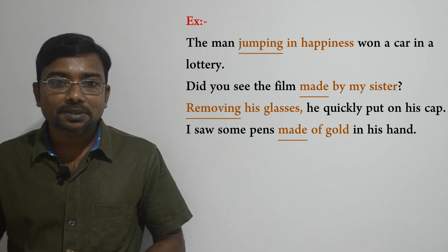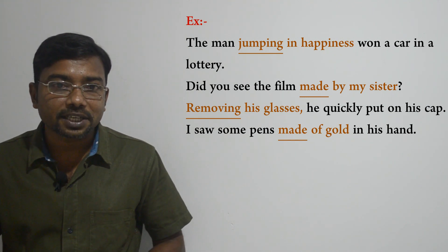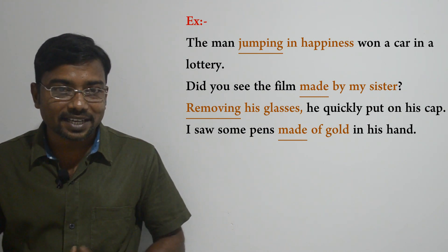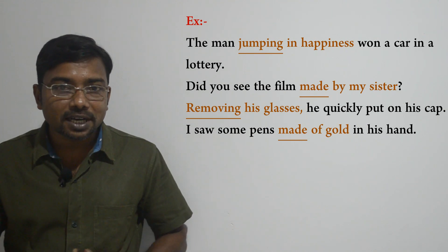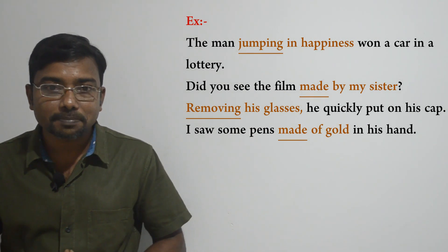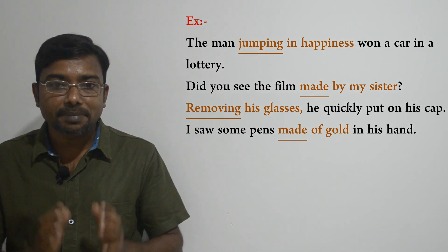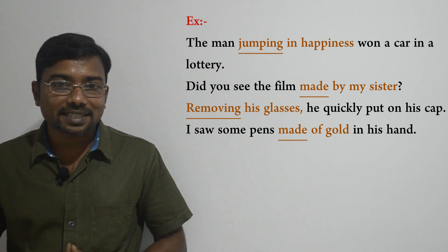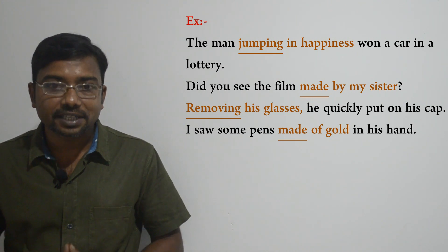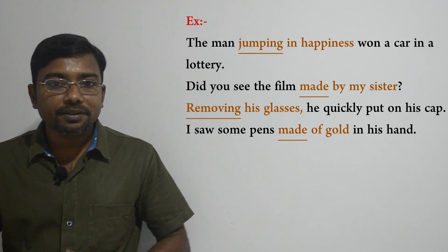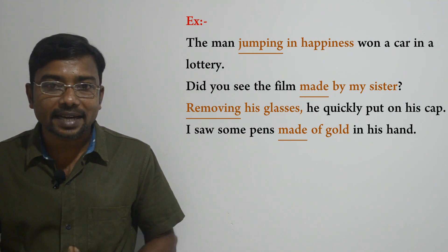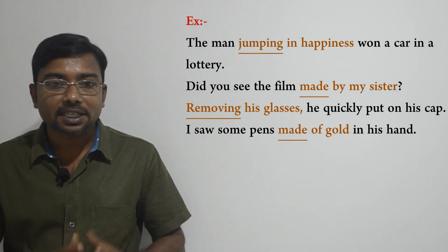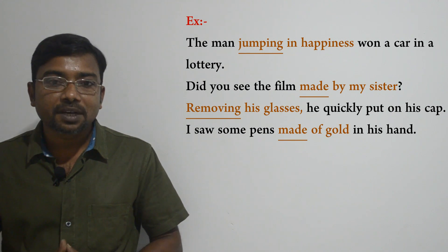Let's move to the next example: 'Removing his glasses, he quickly put on his cap.' Here, 'removing his glasses' is the participle phrase because it begins with the participle 'removing,' which is a present participle. It stands directly before the pronoun 'he' to modify it. The entire phrase acts as an adjective. Remember, when you use a participle phrase at the beginning of the sentence, you need to use a comma after it to separate it from the rest of the sentence.